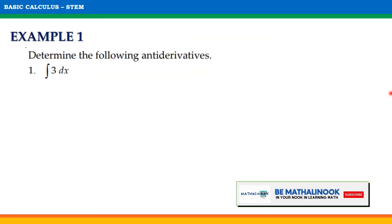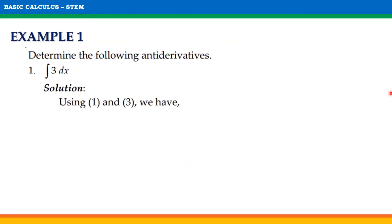Let us apply these theorems in solving some examples. For the first one, let us solve the indefinite integral of 3 with respect to x. Using the first theorem and the third theorem, we will have the indefinite integral of 3 with respect to x is equal to 3 times the indefinite integral of dx. Thus, we will have 3x plus c. Therefore, the indefinite integral of 3 with respect to x is equal to 3x plus c.